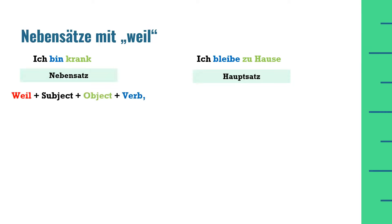The rule to make the Nebensatz is that we put 'weil', which means 'because', at the first position. Soon after that the subject will be there, and at the third position there can be an object — it can also be a preposition or something like that. The conjugated verb will come at the last position of the sentence, and then there will be a comma indicating the Nebensatz has completed. Both verbs must be separated by a comma — if it is not separated with a comma, grammatically it will be wrong, so you have to take care of this comma.